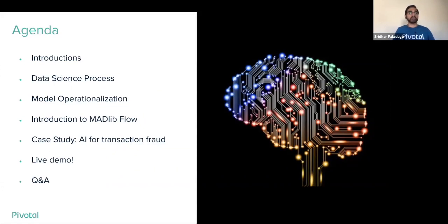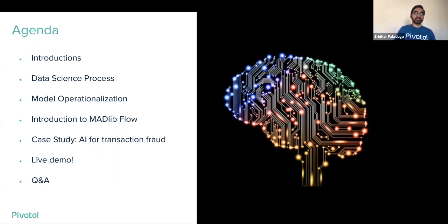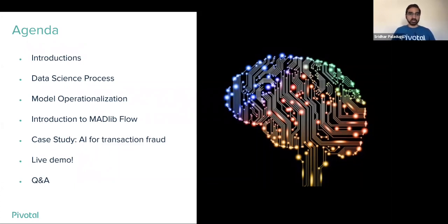Here's a quick agenda of what we're going to be doing today: introductions, which I already did. We're going to be talking about what the overall data science process looks like in today's landscape, how to operationalize models, and what some of the problems associated with that are. We'll introduce a new product called MATLAB Flow — a way of moving machine learning models built on an analytical platform like Green Plum onto scalable deployment platforms like Pivotal Cloud Foundry or Kubernetes. We'll showcase a couple of use cases, share some live videos, and wrap the session with Q&A.